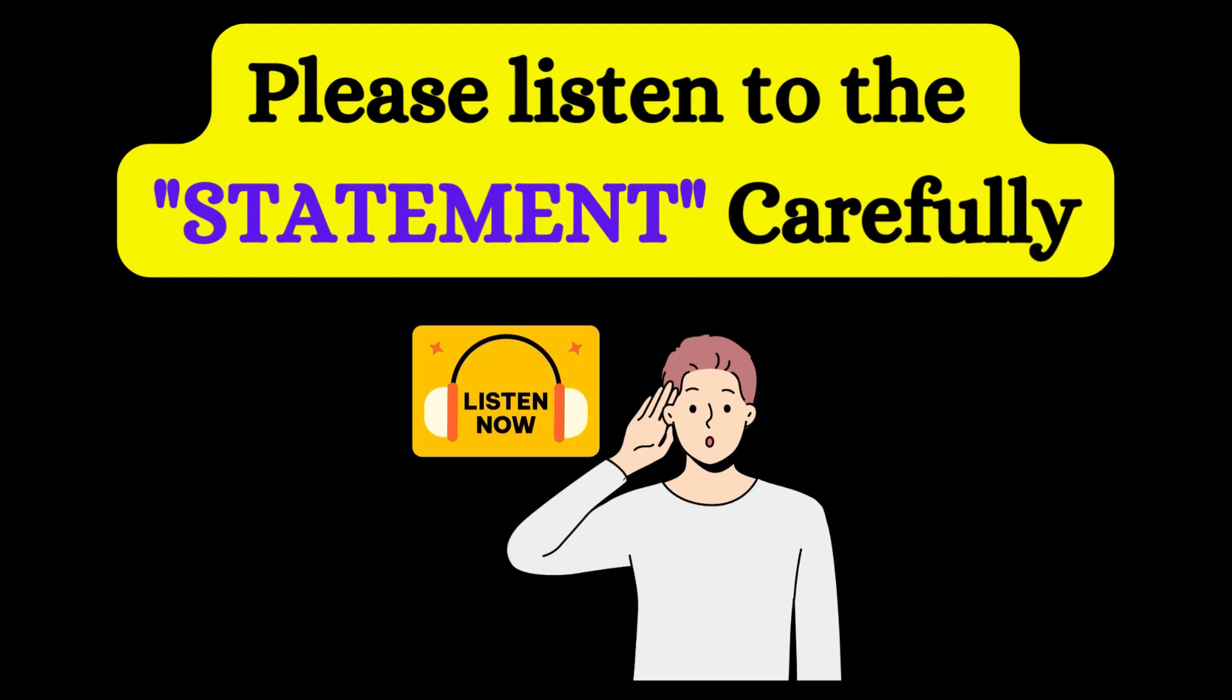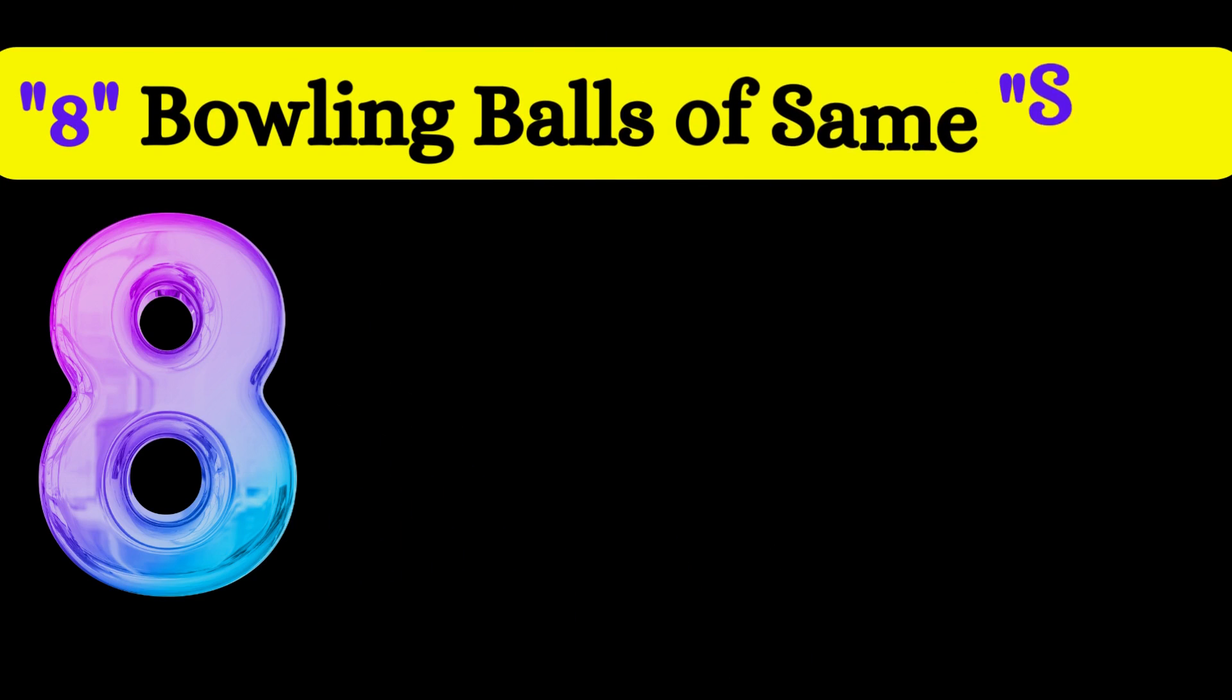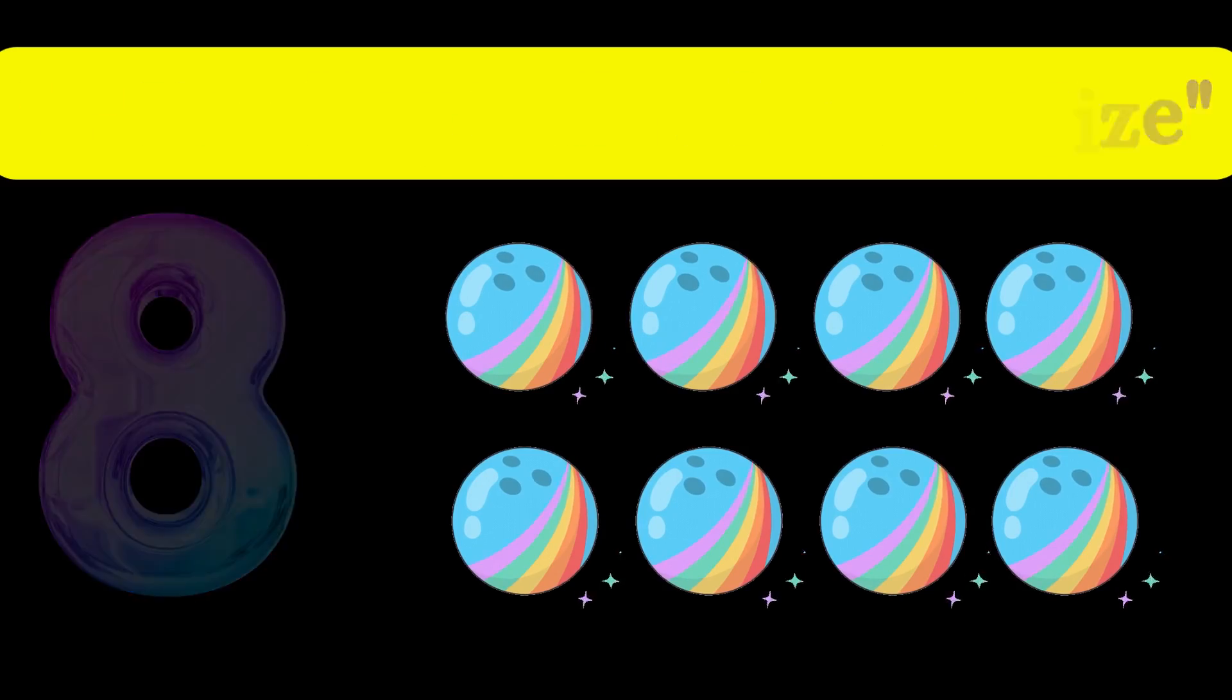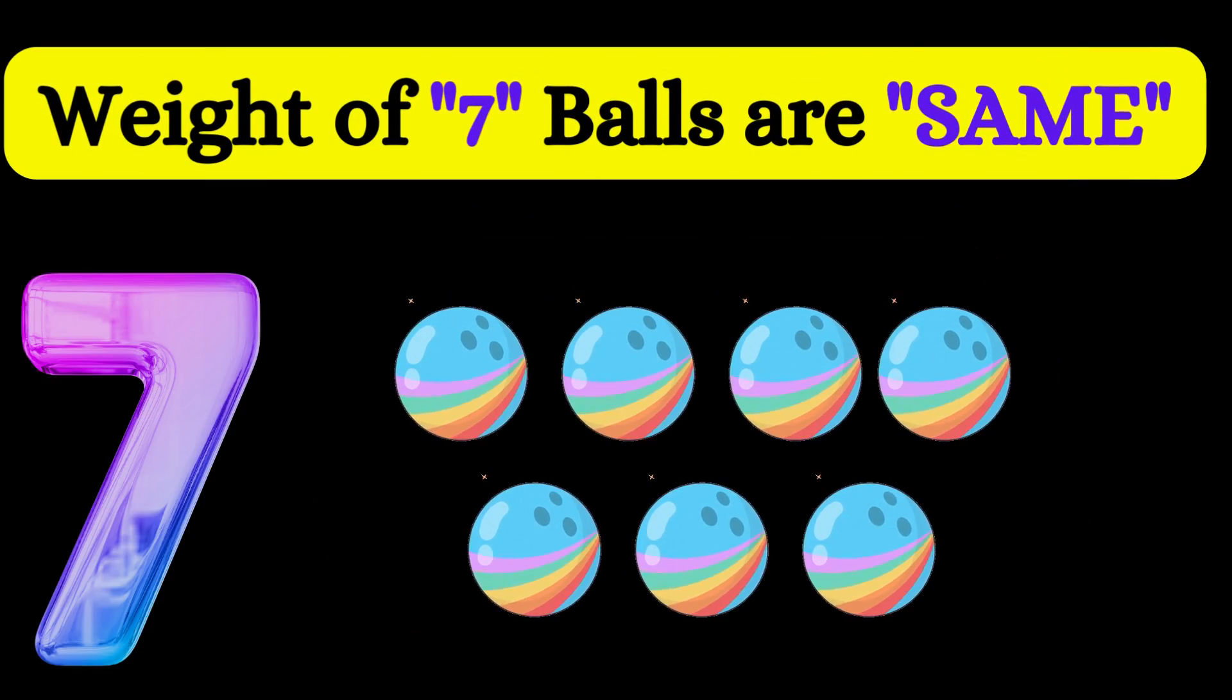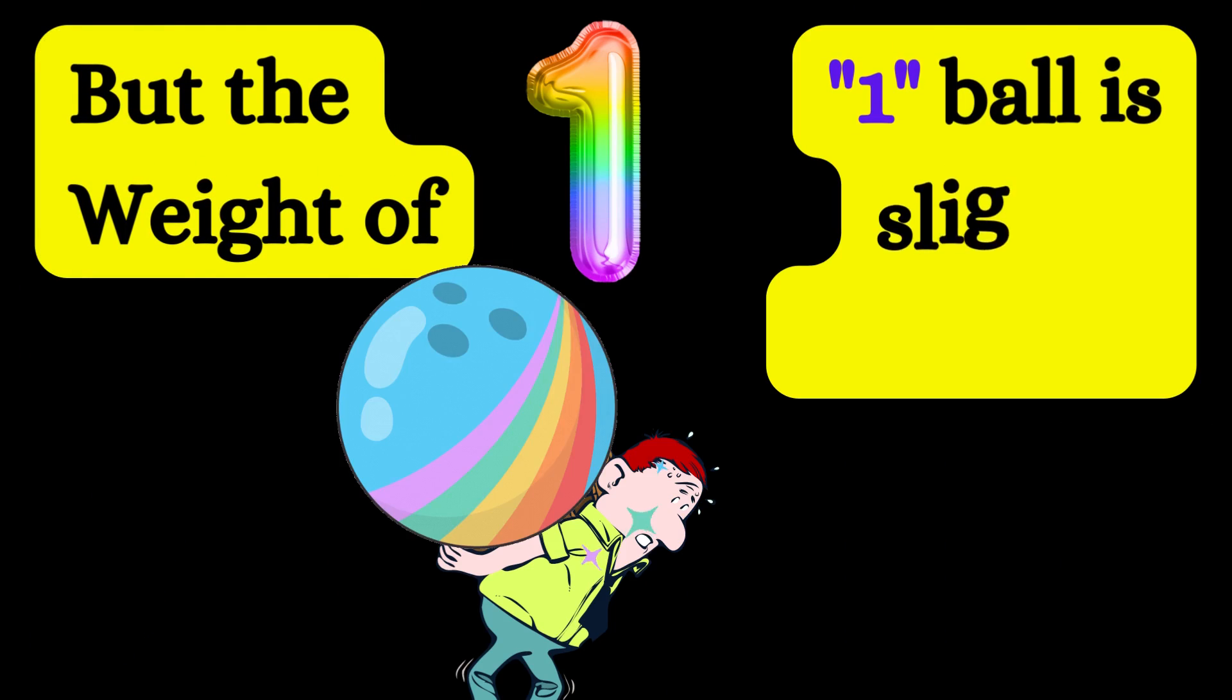There are eight bowling balls of the same size. The weight of seven balls are the same, but the weight of one ball is slightly heavier.